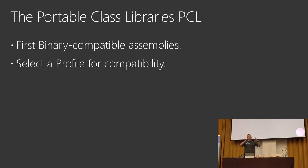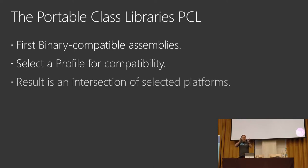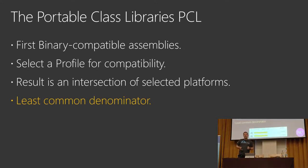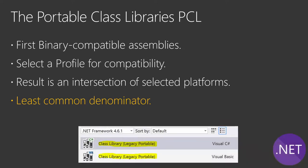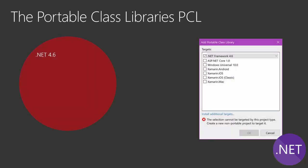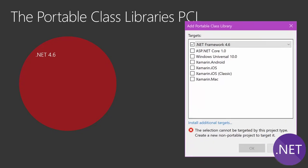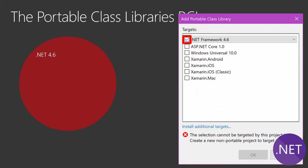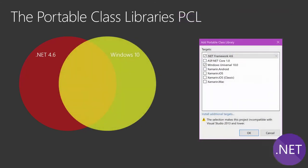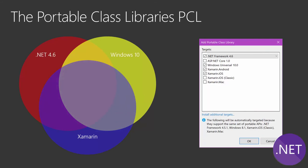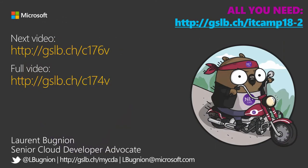The APIs available in a portable class library are the intersection of the platforms you choose. So if you choose .NET, Silverlight, and Xamarin, you get the APIs available across all three — it's the least common denominator approach. In Visual Studio you can still create portable class libraries, but they've been marked as legacy, because Microsoft is pushing you toward .NET Standard instead. To summarize: if you start with .NET 4.6, add Windows 10 UWP, then Xamarin, you end up with the intersection of all those platforms.